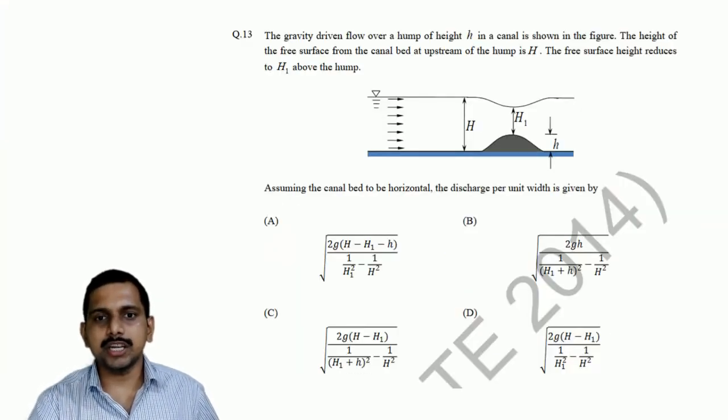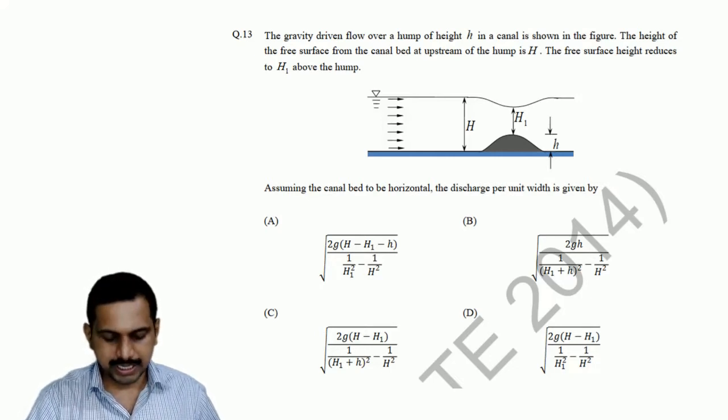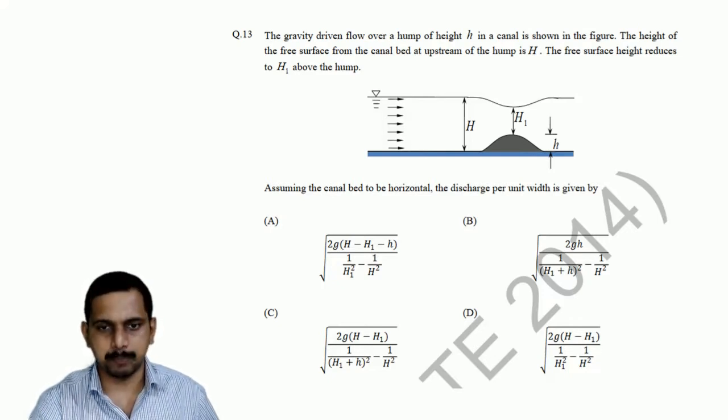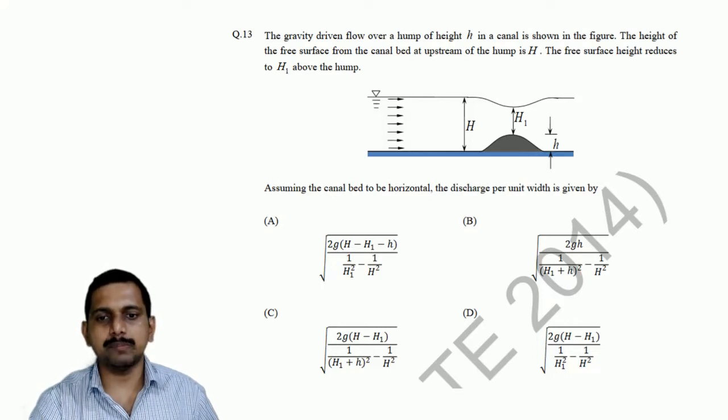The gravity driven flow over a hump of height small h in a canal is shown in the figure. The height of the surface from the canal bed at the upstream of the hump is capital H. The free surface height reduces to H1 above the hump. Assuming the canal bed to be horizontal, the discharge per unit width is given by.